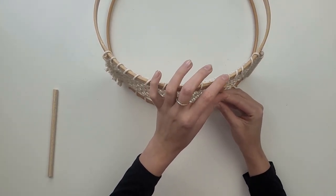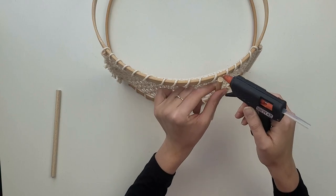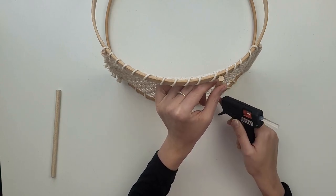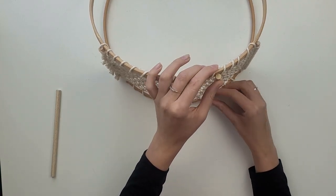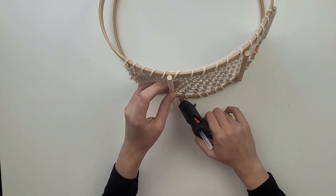To make it more stable, especially when you put heavier books on it, you don't really want it to turn around. So I'm attaching two dowels on the outside of the hoop, preventing it from turning around.